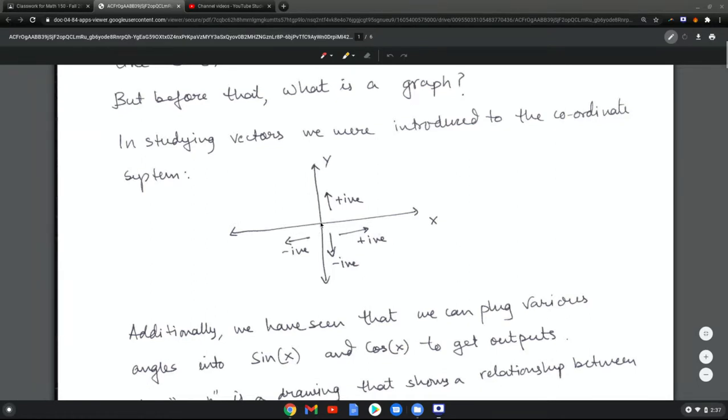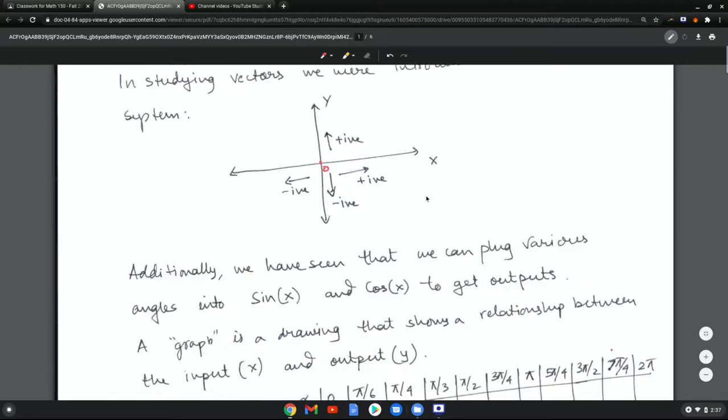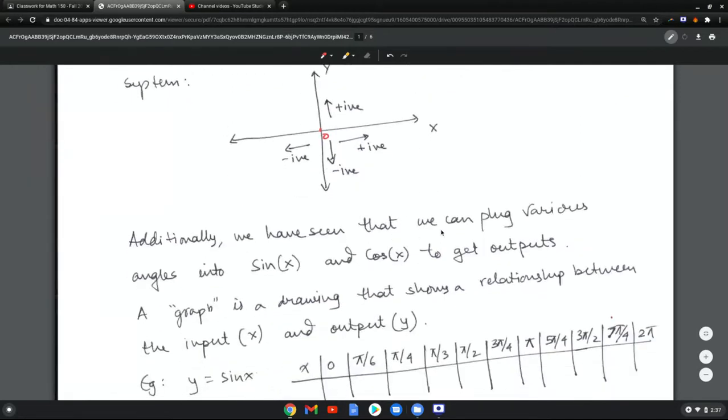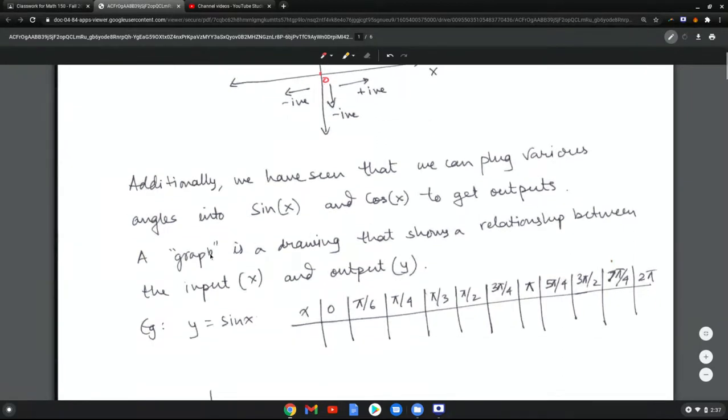The right side of the x-axis is positive, moving to the left means negative. This here is zero. Going up is positive and going down is negative. Additionally, we have seen that we can plug various angles into sine x and cosine x to get outputs. And then what we define a graph is the drawing that shows a relationship between the input, that's the x value, and the output, which is the y value.